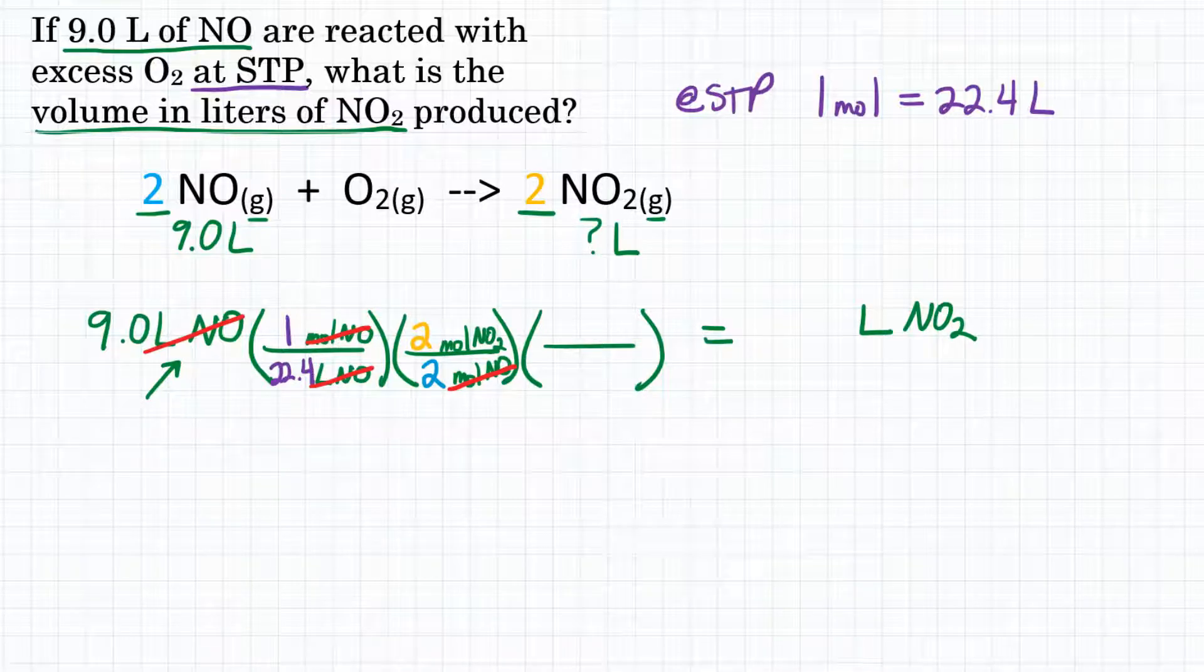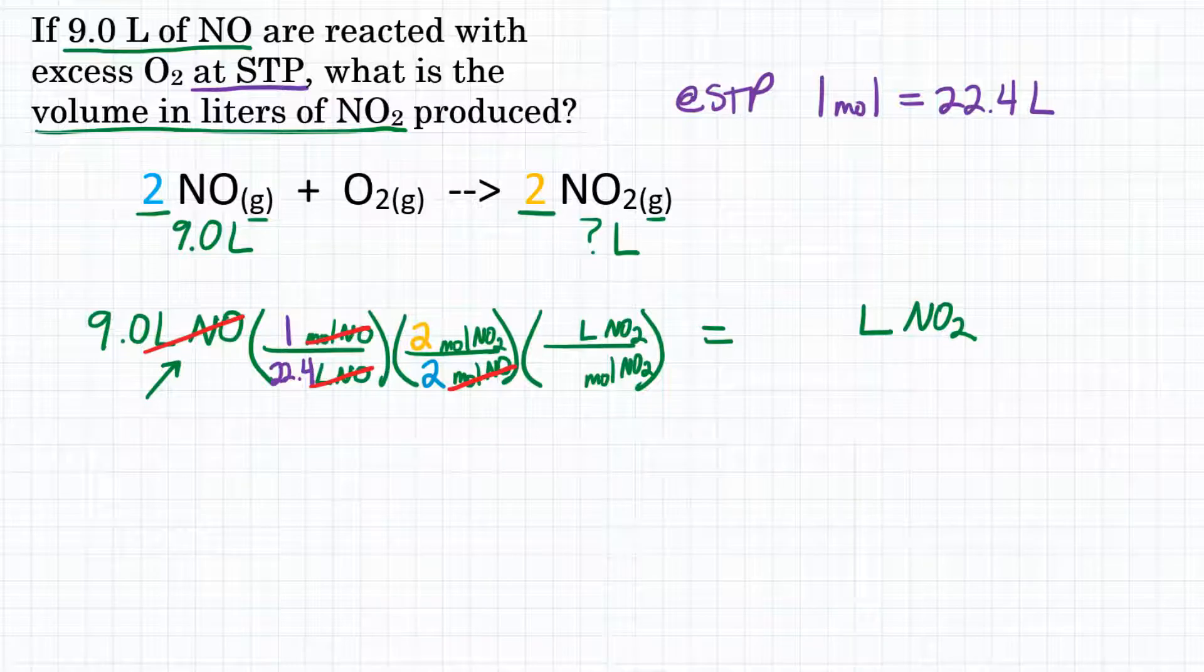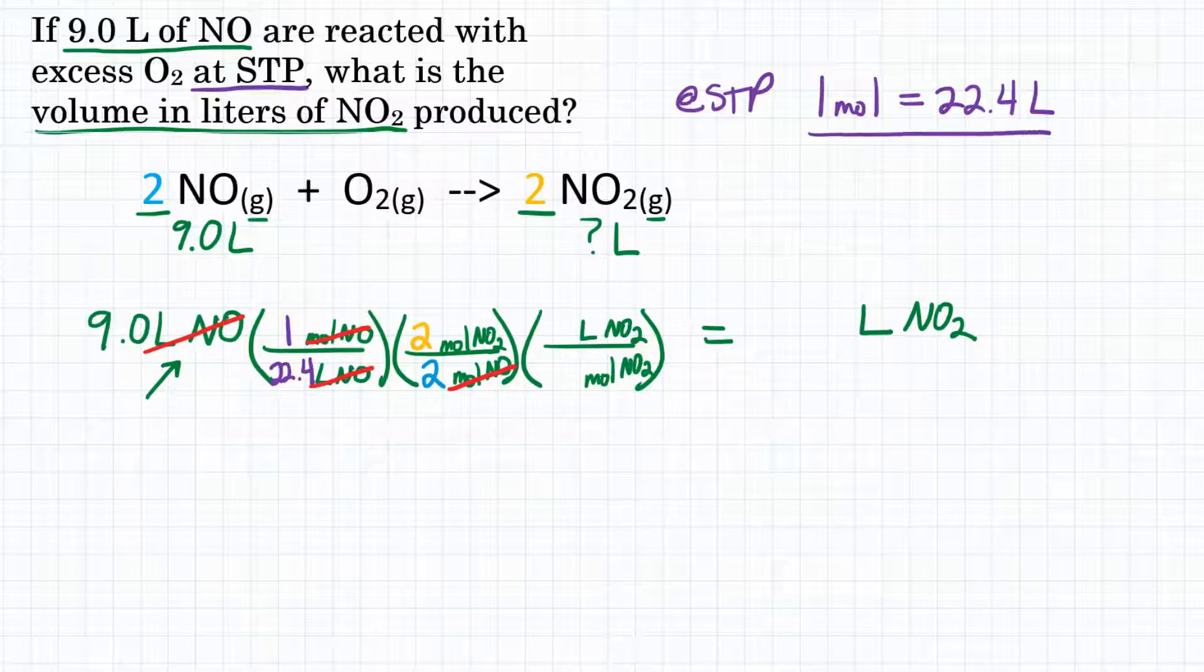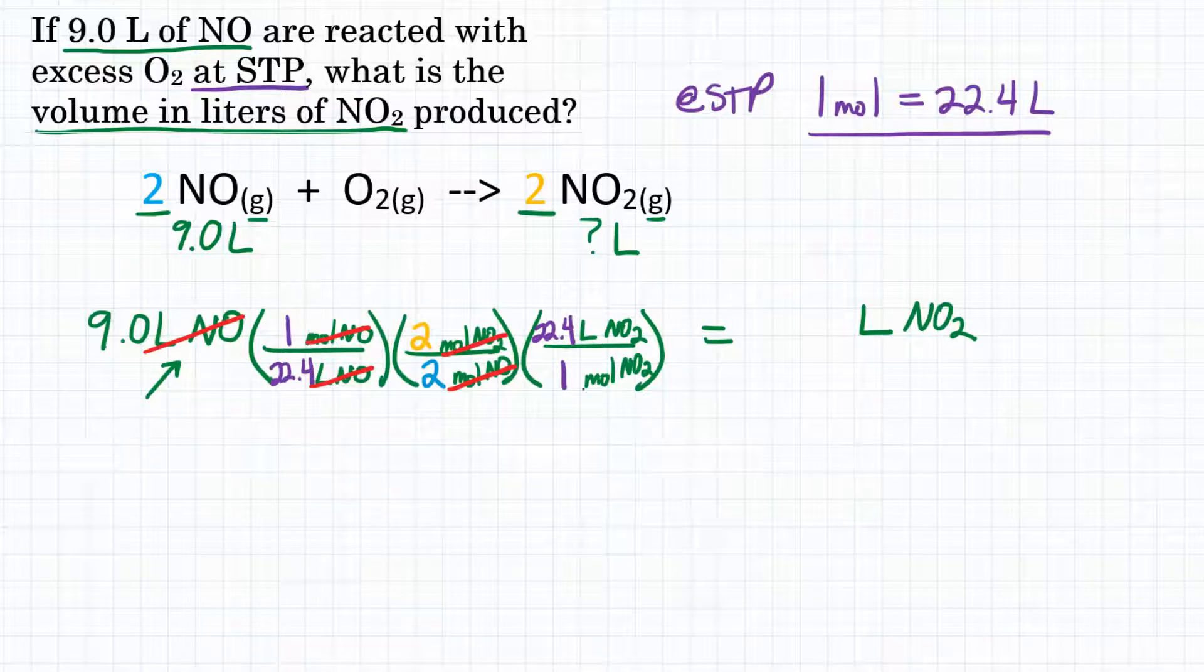So then our last step, we want to get rid of moles of NO2 and convert to what we're looking for, which is liters of NO2. What's the relationship between moles and liters? Well, we already talked about this. If it's any gas, one mole is 22.4 liters. So again, we have one mole, except it's on the bottom this time, and we have 22.4 liters on top. So moles of NO2 will cancel, and we are left with exactly the unit we need, which is liters of NO2.